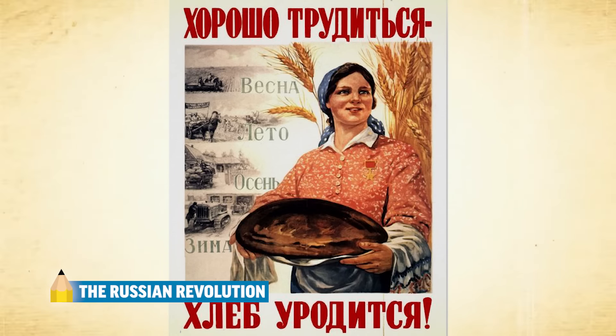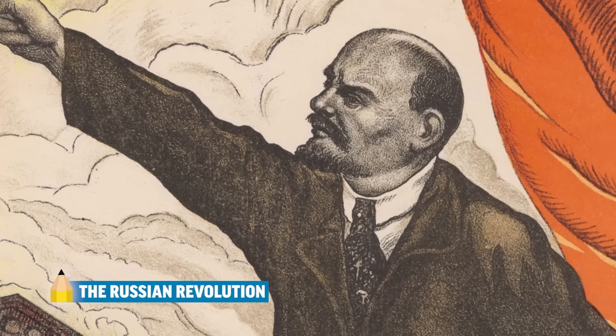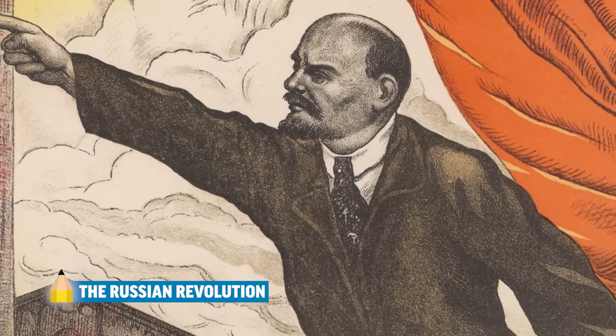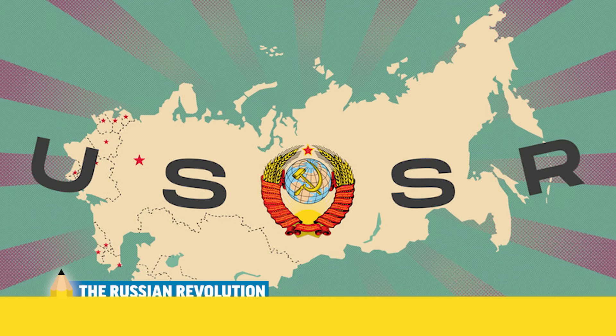It's under Lenin and his Bolsheviks that the Russian Revolution begins. These Russians want peace, land, and bread. The Bolshevik-led Russian Revolution occurs, removing the monarchy. After a civil war, the Union of Soviet Socialist Republics is officially established in 1922.